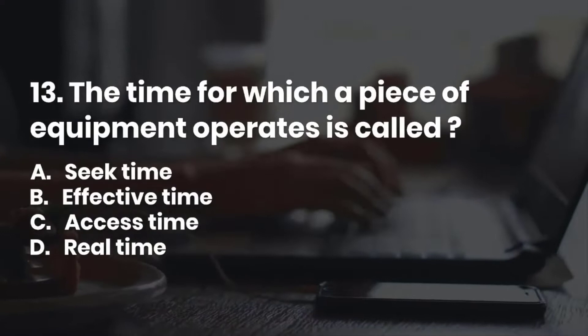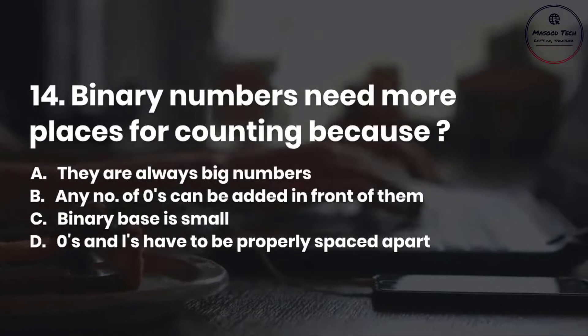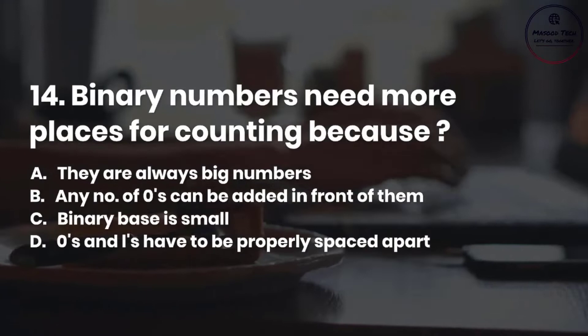Number 14. Binary numbers need more places for counting because: A. They're always big numbers. B. Any number of zeros can be added in front of them. C. Binary base is small. D. Zeros and 1s have to be properly spaced apart. Correct answer is C.